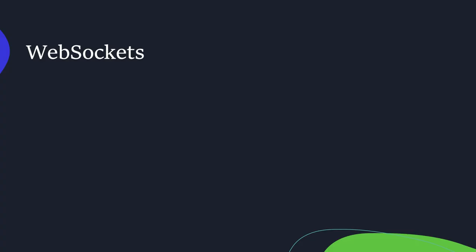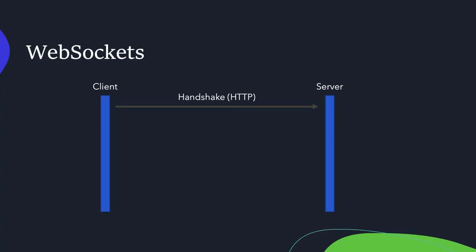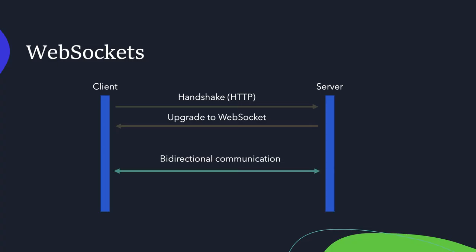Now let's look at websockets. In the world of websockets, you've got your client and your server. The client sends an HTTP request, commonly referred to as the handshake. The server acknowledges this and sends an upgrade response — basically the client says 'I want to use your websockets API, are we good?' and the server responds 'yes, let's communicate through websockets.' The client and server then upgrade their communication to a long-lived TCP connection. With this connection established, both the client and server can communicate bidirectionally. That's the basic idea behind websockets.